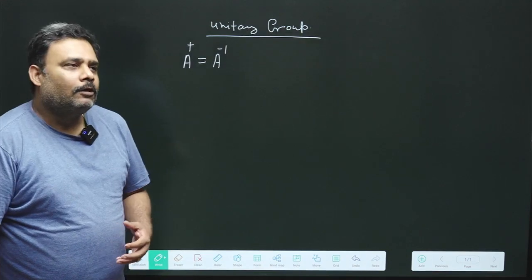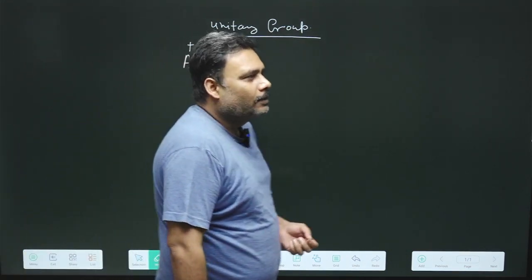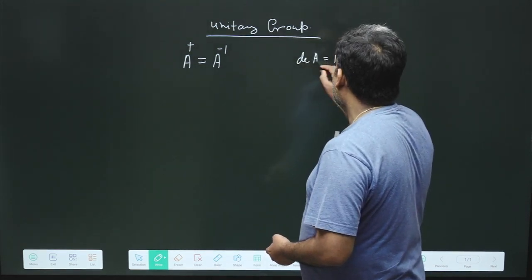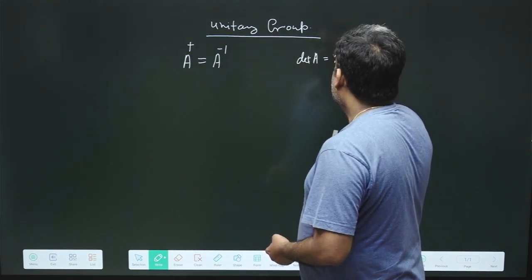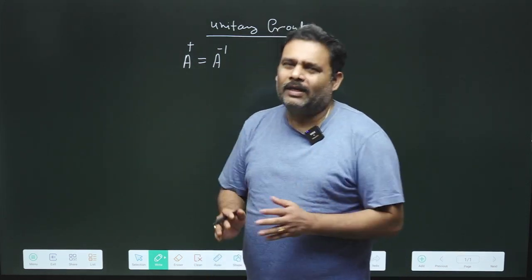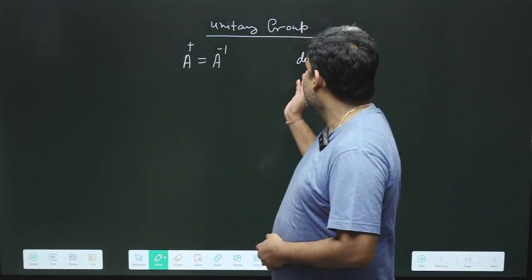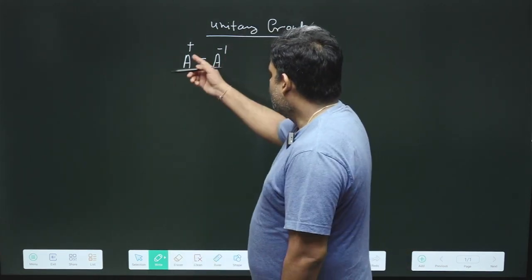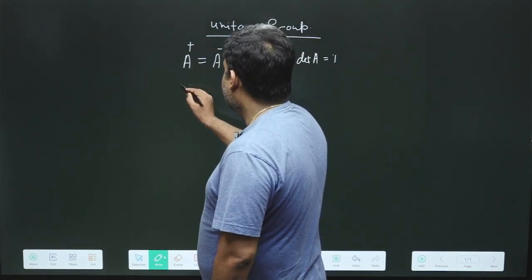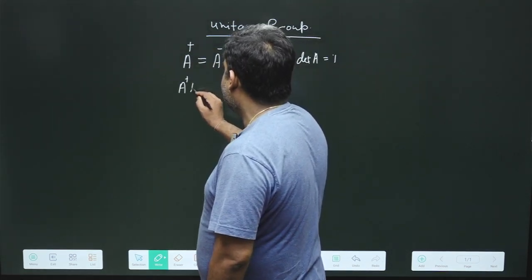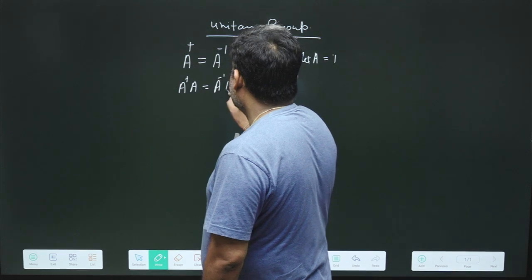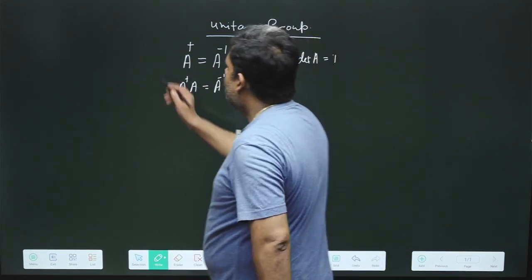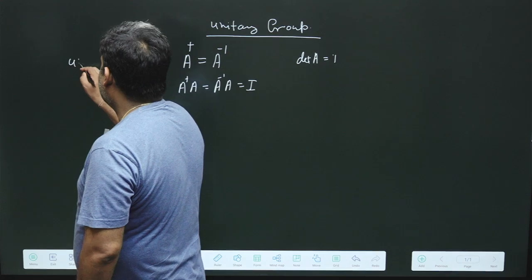Here we are talking about a unimodular unitary matrix. The meaning of unimodular is that the determinant of A must be equal to 1 — specifically, the modulus of the determinant is 1. Such a matrix is called a unimodular unitary operator. Another property is that A dagger A equals A inverse A, which equals the identity I. This is the property of a unitary operator or unitary matrix.